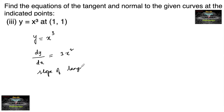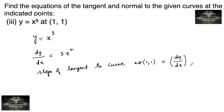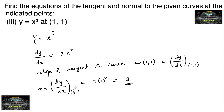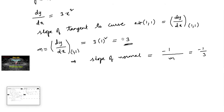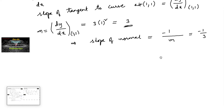The slope of the tangent to the curve at (1, 1) is dy/dx evaluated at (1, 1). Let m = dy/dx at (1, 1). Since the x-coordinate is 1, substituting gives m = 3. So the slope of the tangent is 3. Therefore, the slope of the normal is -1/m = -1/3.